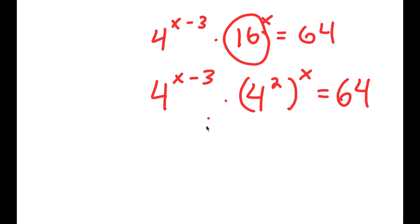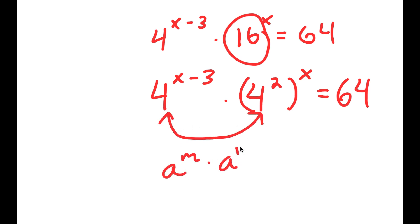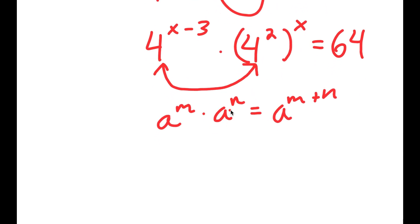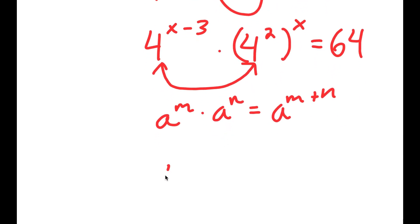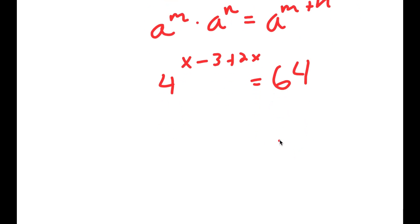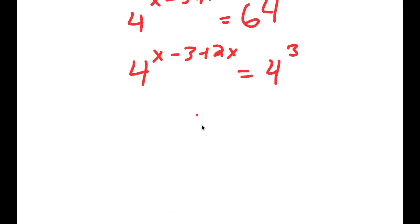Since these two terms have the same base, I can use the rule that a to the power of m times a to the power of n equals a to the power of m plus n. Now 4 squared to the power of x equals 4 to the power of 2x, so I have 4 to the power of x minus 3 plus 2x equals 64. Since 64 equals 4 to the power of 3, I now have 4 to the power of x minus 3 plus 2x equals 4 to the power of 3.